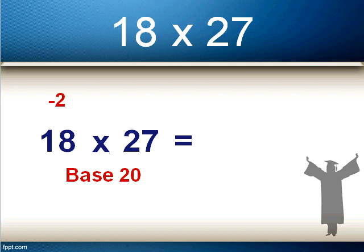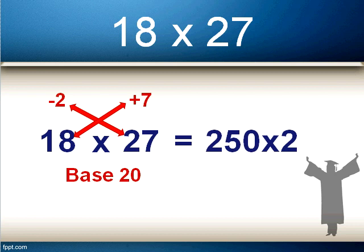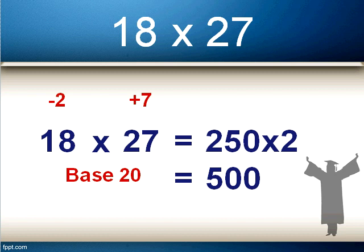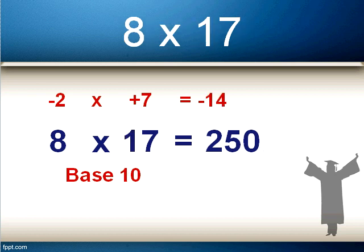The first step: add minus 2 to 27, which gives 25 — or add 7 to 18, which also gives 25. It doesn't matter which way you do it. We think of 25 not as 25 but as 250, and because it's base 20 it becomes 250 times 2, which gives 500. The second step: multiply the two top red numbers — minus 2 times 7. 2 times 7 is 14, and minus times plus is minus, so we get minus 14.